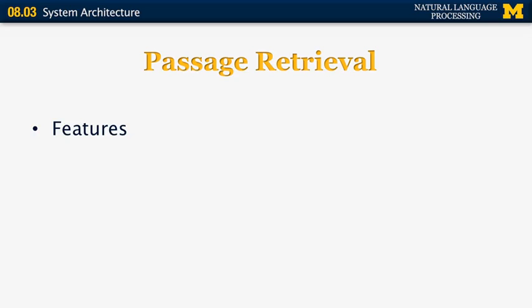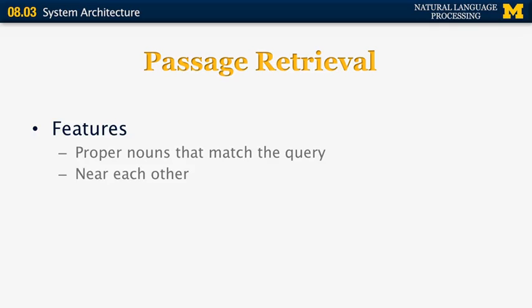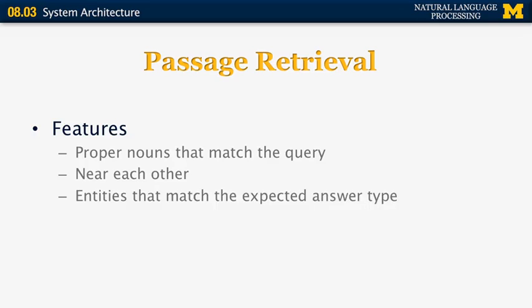What about passage retrieval? Some of the features used in passage retrieval are proper names that match the query. For example, if the question is 'who wrote Tarzan,' we are looking for passages that contain the word Tarzan. We want the words to be near each other, so if we have multiple proper nouns in the question, we want those to appear near each other in the answer as well. We also want entities that match the expected answer type — if we're looking for an author like 'who wrote Tarzan,' we are looking for sentences that contain persons.